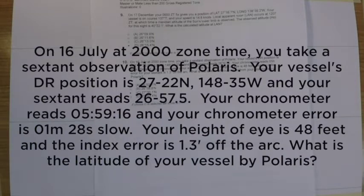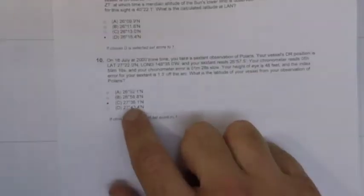Your sextant reads 26 degrees 57.5 minutes, your chronometer is 05:59:16 and our error is 1 minute 28 seconds slow. It gives a height of eye and an index error for us. What is our latitude by Polaris? Looking at the answers, we can see that they're not very close so we have some room for error.